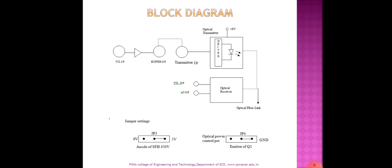The block diagram of the experiment: the TTL board has a buffer circuit given to the transmitter circuit. The transmitter has an emitter, comparator, and LED driver circuit. On the receiver side, there is a photodiode detector, and the detector circuit output is given to an AC amplifier for the analog output signal, then received at the CRO.